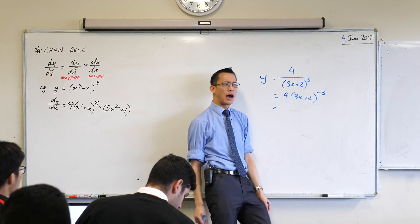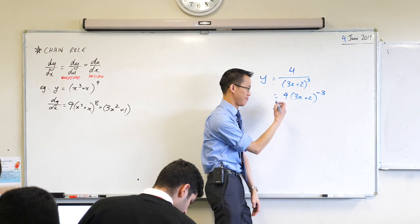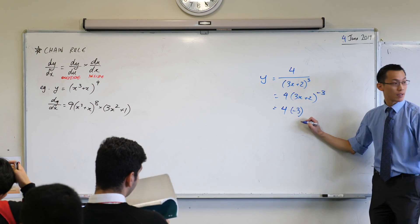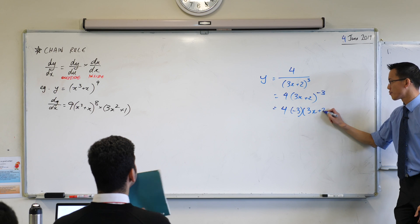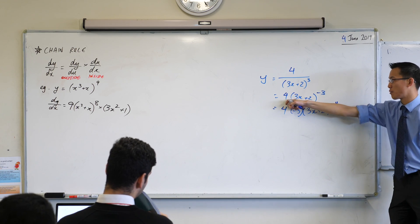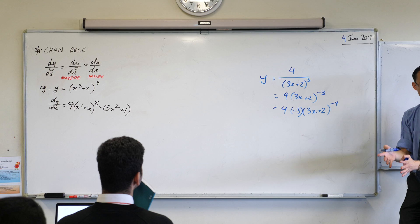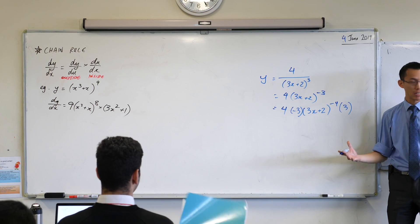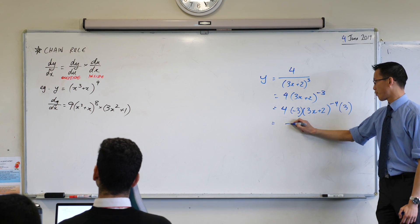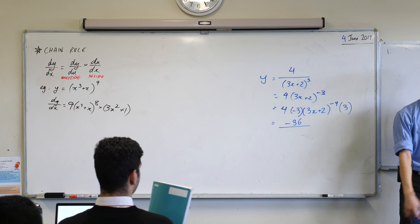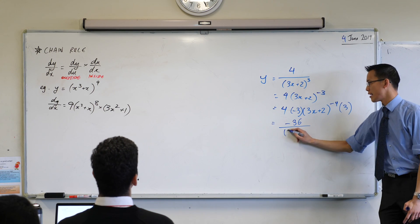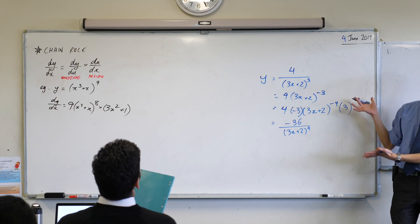Let's do the outside. What effect does this 4 have? I can just write it out the front, and then I process this: multiply by negative 3, I've got this other thing, and then the power drops down by 1. That's the outside function — something to the power of negative 3. Now the inside: the derivative of (3s + 2) is just 3. Tidying up: 4 times negative 3 times 3 gives negative 36. And since the original had no negative indices, I'll put this back on the bottom: −36/(3s + 2)⁴.